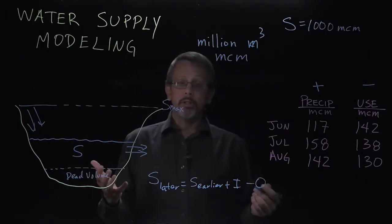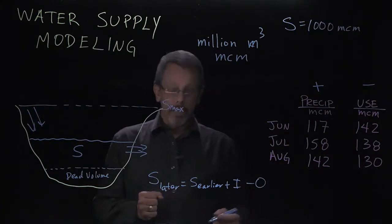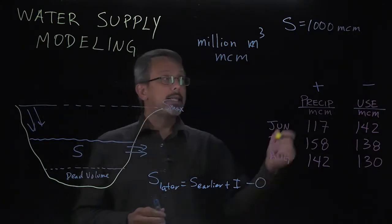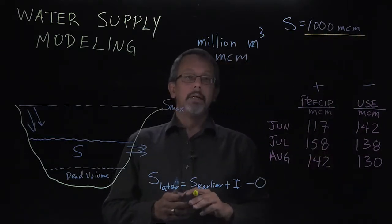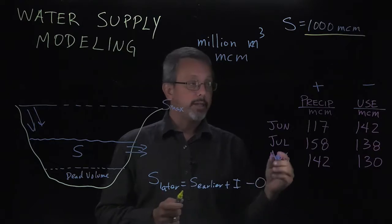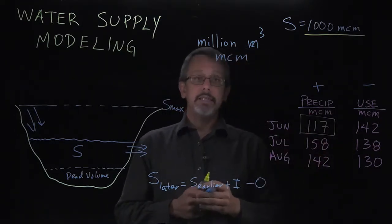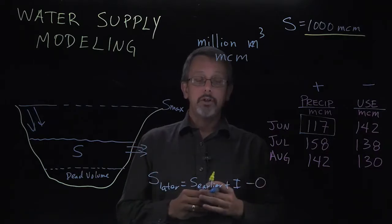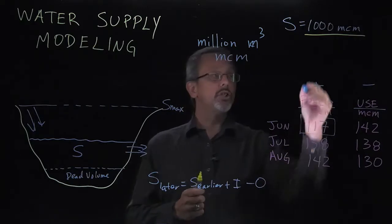So how do we go about doing this? Again, it's simply a matter of accounting. I can look, for example, in the month of June. Let's assume that it's at the end of the month of May and here's our initial storage that we have. And we can go and look. If we see here, we have a value of 117 million cubic meters that we estimate are going to flow in based on history of what happens in June, precipitation in June.